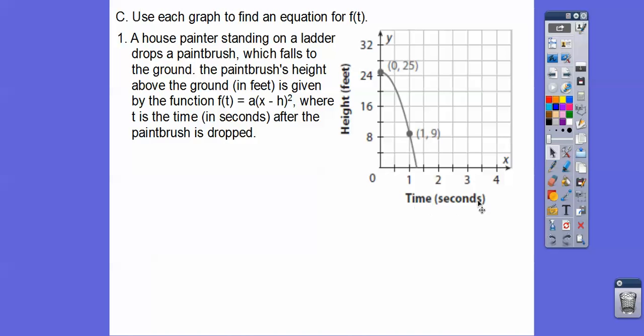And then f, they should have done h of t, so it's the height with respect to time, but they did f of t. I don't know why. Anyway, so here's a house painter standing on a ladder, and he drops a paintbrush. You're going to see this function happen a lot, you guys. These numbers change, but you'll see some consistency. Drops a paintbrush from the height above at 25 feet above the ground right there, and it's given by f of t equals a times x minus h squared, where t is time in seconds after the paintbrush is dropped. So let's go ahead and write an equation. There's hk up there.